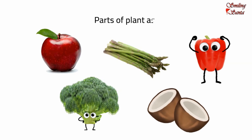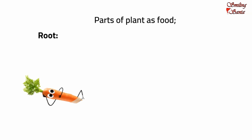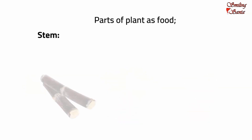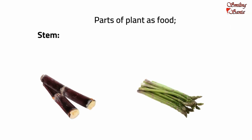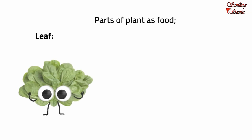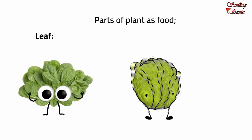Plants are the main source of our food. We use different parts of different plants as food. We eat roots such as carrot, beetroot, radish, and turnip. We eat stems such as sugarcane and asparagus. We eat leaves such as spinach, cabbage and lettuce.